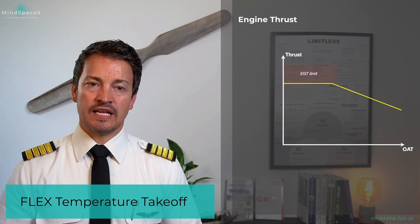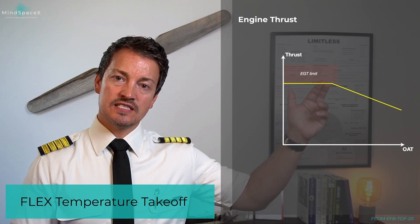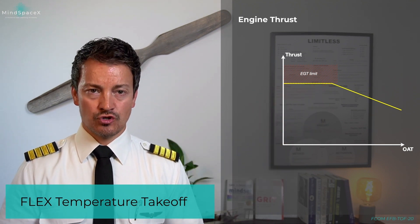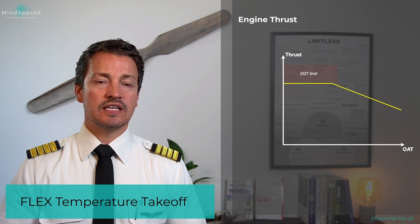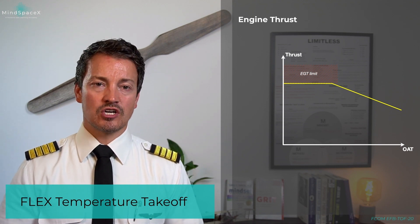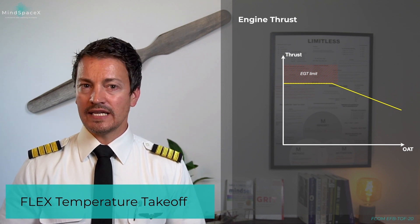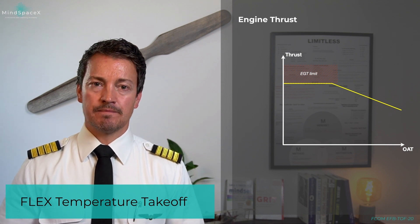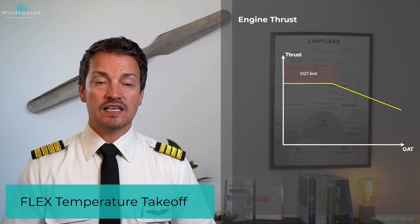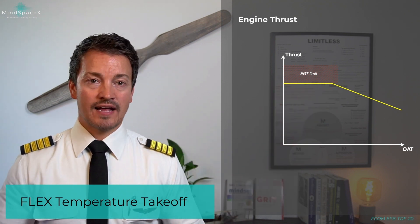A flat rating is a limit on the engine. When the temperature outside decreases and density increases above a certain value, the engine is capable of producing the same amount of thrust but with less effort — meaning less fuel flow. We call it the EGT limit. As you can see on the graph, the line flat-lines — that is the flat rated limit for the engine.